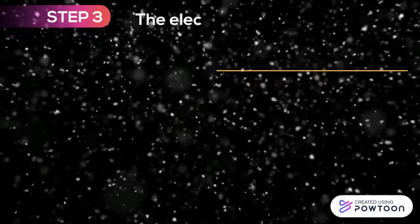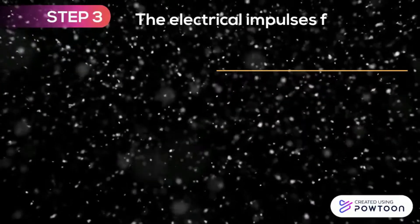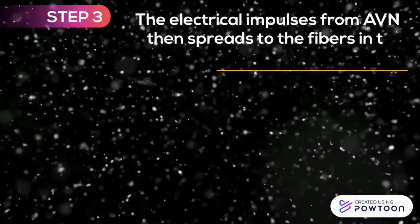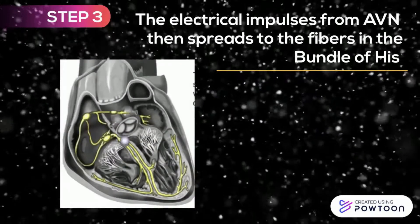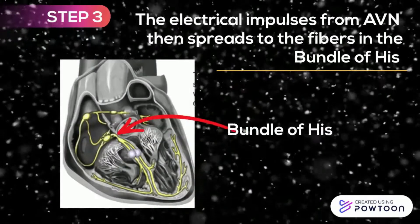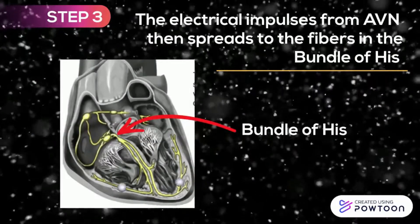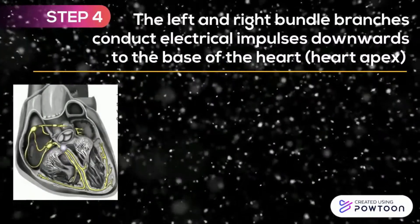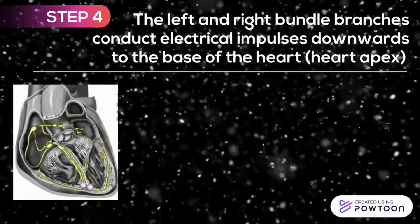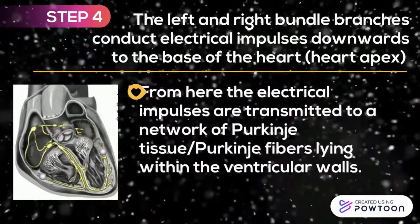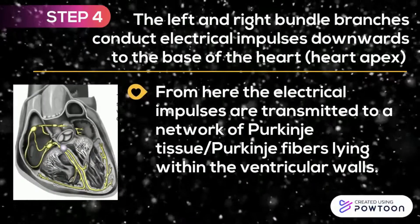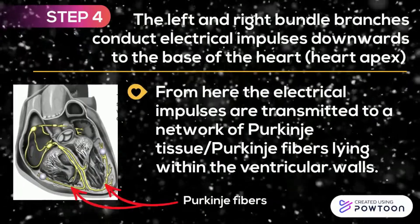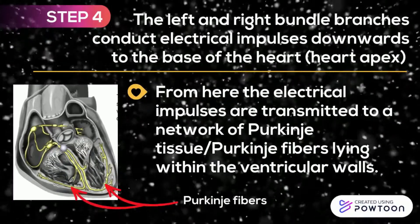Step 3: The electrical impulse from the AVN then spreads to the fibers in the bundle of His. Step 4: The left and right bundle branches conduct electrical impulses downwards to the base of the heart. From here, the impulses are transmitted to a network of Purkinje tissue, or Purkinje fibers, lying within the ventricular walls.